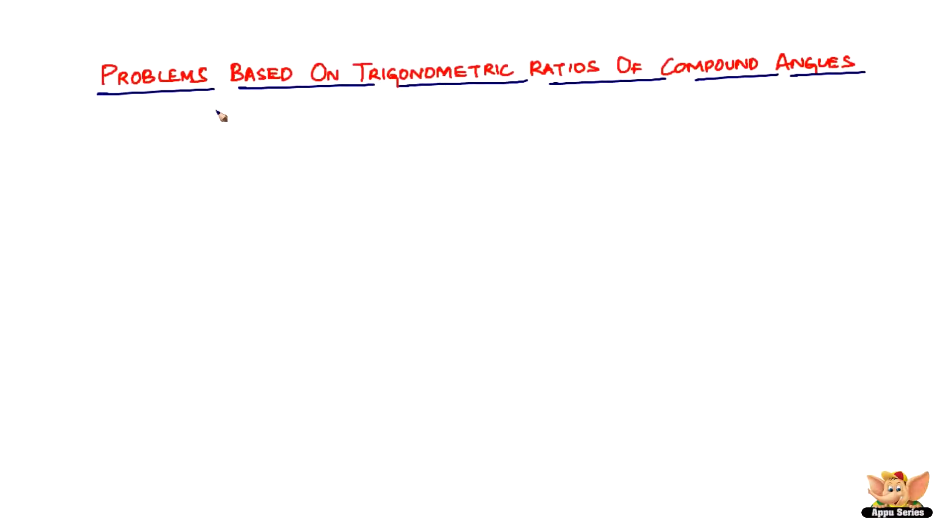In this video, let us continue to solve more problems based on trigonometric ratios of compound angles. Here we've got a problem: if A plus B equals π by 4, prove that (1 plus tan A) into (1 plus tan B) equals 2.